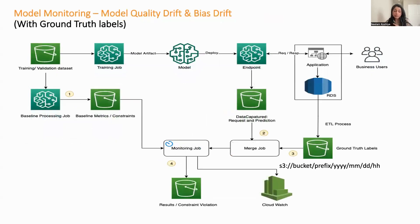For the two monitoring types that require ground truth — model quality drift and bias drift — the process is very similar. The difference is that both require ground truth to compute the final metrics. There is an additional step: you need to set up an ETL process to bring ground truth labels to S3, adhering to a specific format. Then you create a baseline from the training dataset, merge data captured from the production endpoint with the ground truth labels, and Model Monitor compares the metrics and pushes results or violation reports to S3 or CloudWatch.